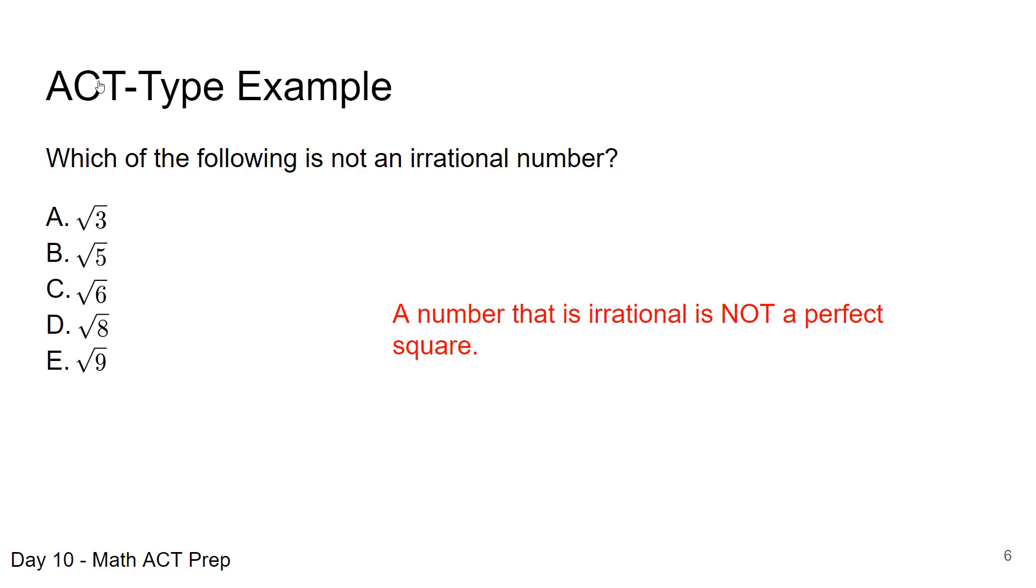A number that is irrational is not a perfect square. The square root of a perfect square would make a rational number, and that's actually what we're looking for. Remember, NOT an irrational means looking for a rational. That gets the answer to be option E, answer choice E: the square root of nine, which when we simplify that is three, a rational number.